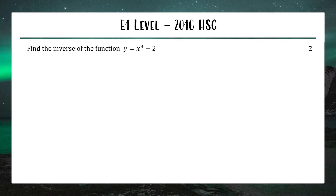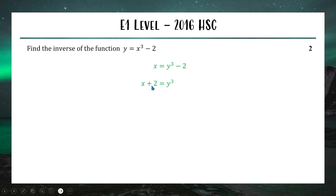Anytime you want to find the inverse of a function algebraically, all you need to do is swap your variables — y becomes x, x becomes y. Now the goal is to rearrange this equation to make y the subject, and that will be our inverse function. We're going to add the two across, swap the sides, and then since y cubed equals x plus two, we take the cube root of both sides: y equals the cube root of x plus two. That right there is our inverse function for two marks.